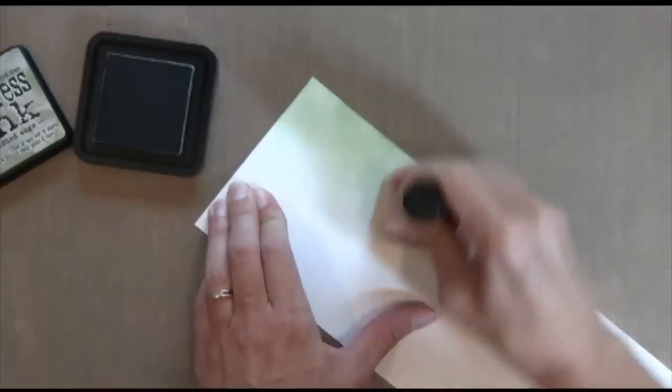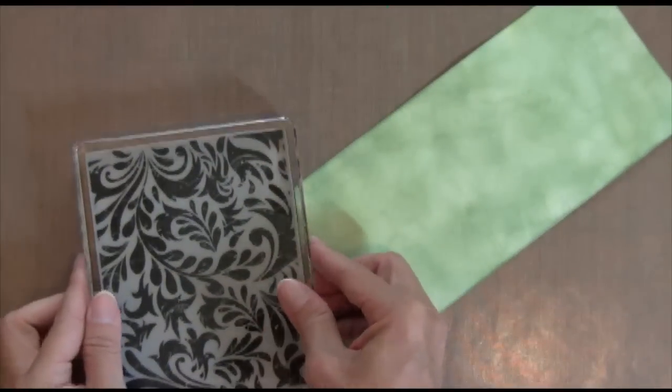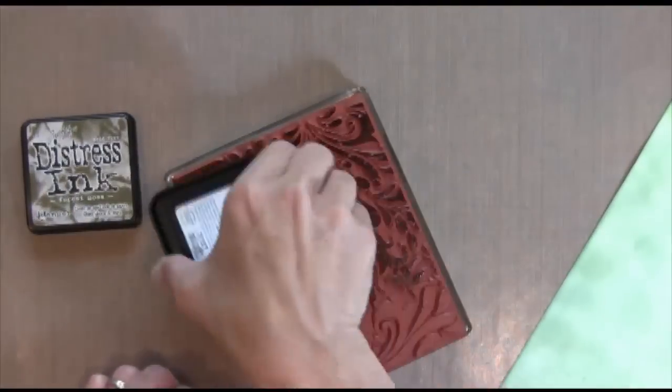Okay, so what I did first was I took four and a quarter by 11 inch sheet of paper, and I inked it up. I actually scored it down the middle, and then I inked the whole thing up with bundled sage.